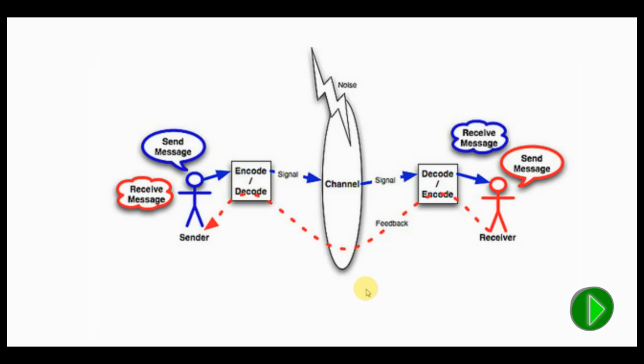So let's take a look at this as an example. On the left you see the sender, which for this example would be me. On the right, the receiver, which is each of you. So right now what I'm doing is sending a message.